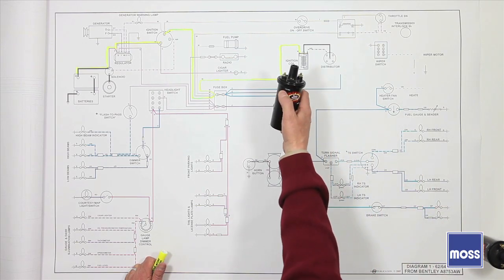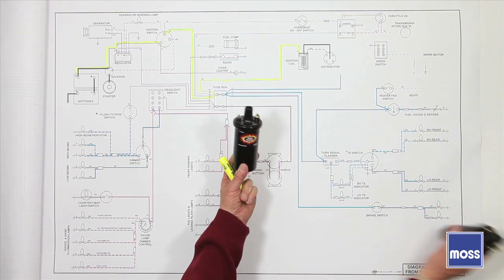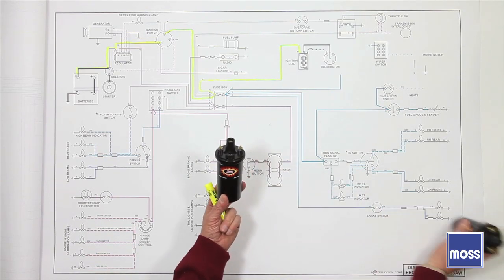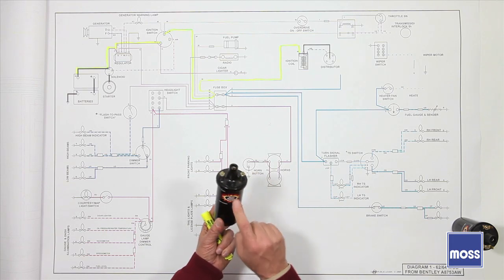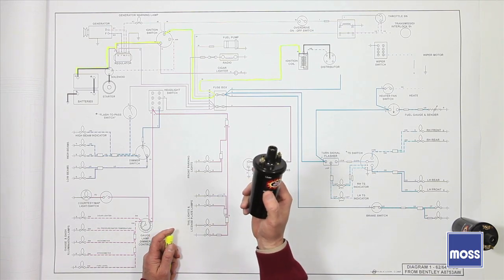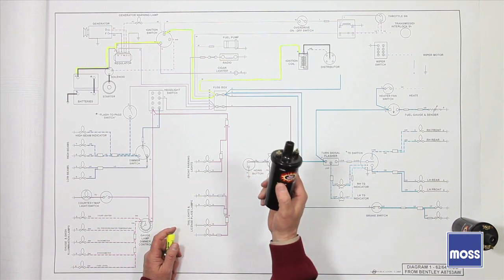We learned that if we put a 1.5 ohm coil in there, she could do the job. She would do the job just fine, just like this one did, but as soon as the voltage begins to climb back up to normal system voltage again, this coil will have over 100 watts of energy running through it and she will not stand that for very long.